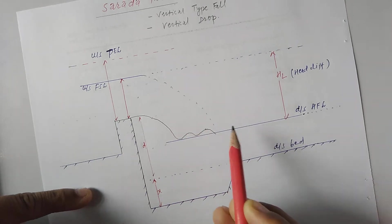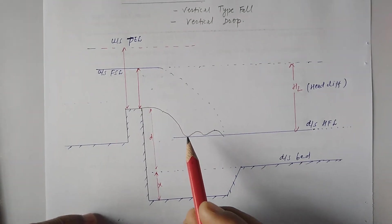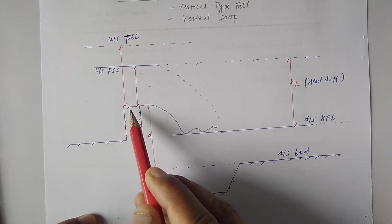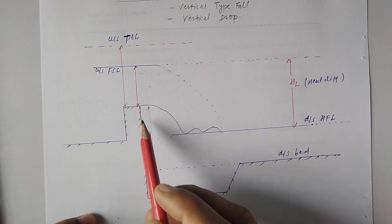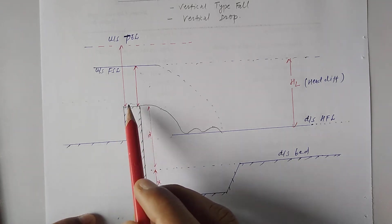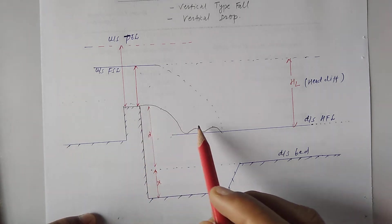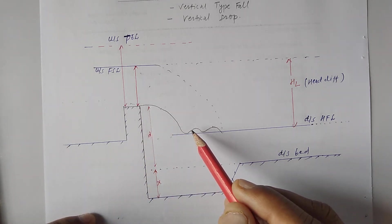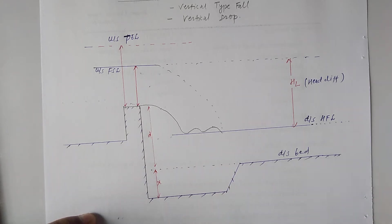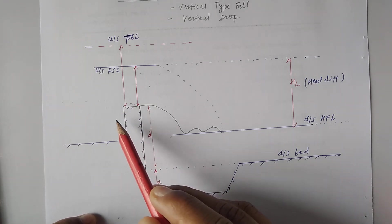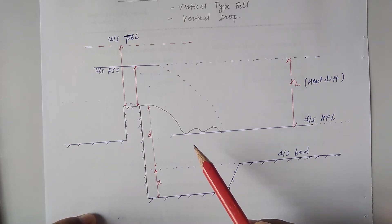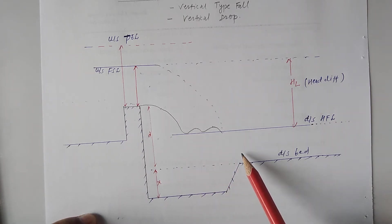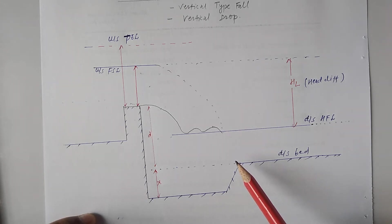Water falls from the topmost point of the crest. Whenever the natural available ground slope is steeper than the design bed slope of the channel, the difference in drop is adjusted by constructing a vertical slope — a channel drop or vertical fall.